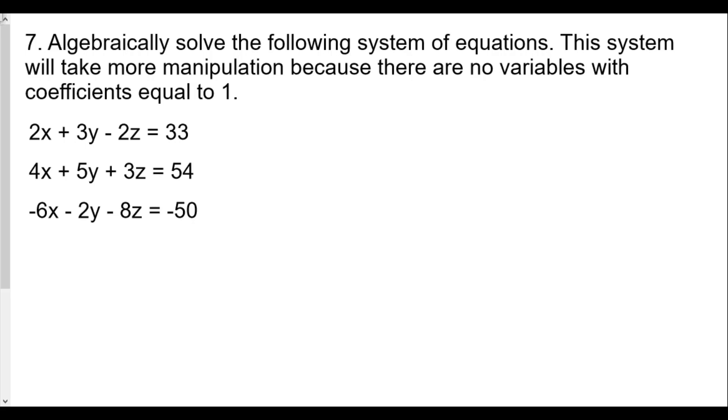This is question number 7. Algebraically solve the following system of equations. This system will take more manipulation because there are no variables with coefficients equal to 1. So we have 2x plus 3y minus 2z equals 33, 4x plus 5y plus 3z equals 54, and 6x minus 2y minus 8z equals negative 50.